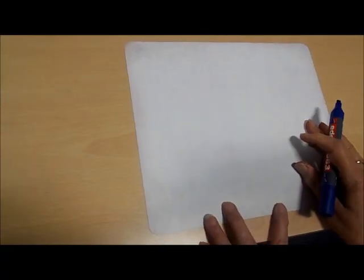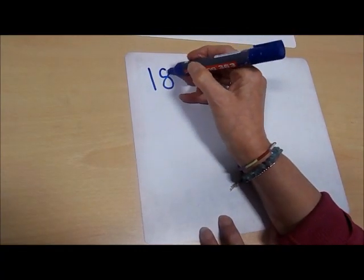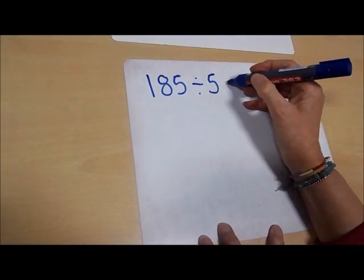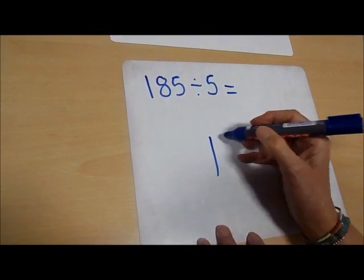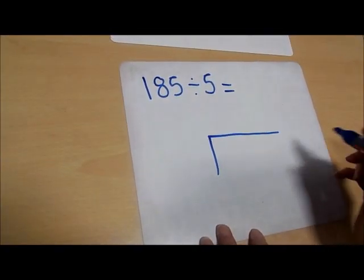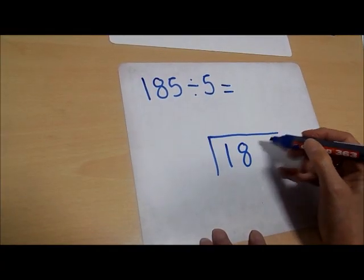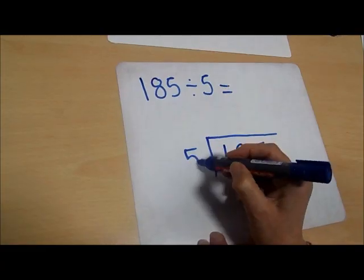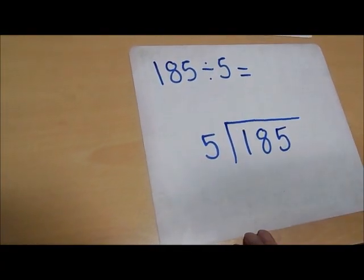Now if we look at short division with three digits, we're going to look at the calculation 185 divided by five. As before, this is the way we set out our sum — 185 needs to go in here and five goes here, because we're dividing this number by this number.